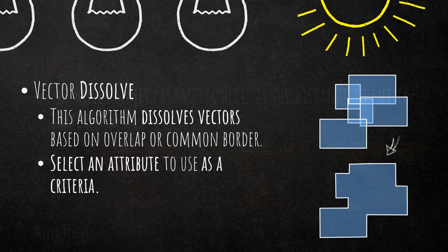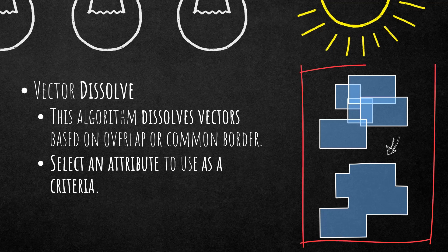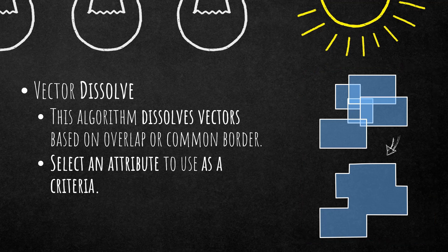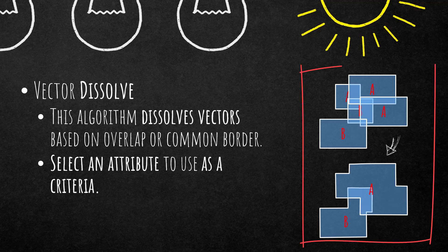One more slide before we start in eCognition, regarding the vector dissolve. This algorithm dissolves vectors based on overlap or common border. You can also select an attribute to use as criteria. It's possible to dissolve all polygons within one thematic layer into one, or choose an attribute — for example a classification column — so it only dissolves polygons that share the same value within that field. If you leave it empty, it dissolves all polygons.